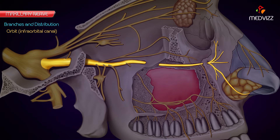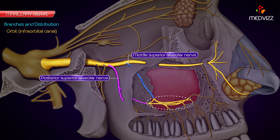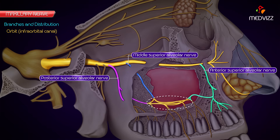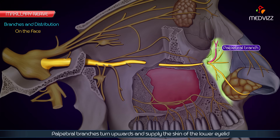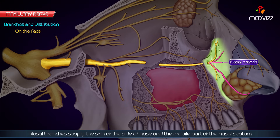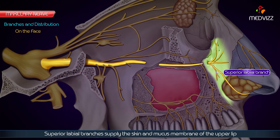An important point to note is that the superior dental plexus is formed by the posterior, middle, and anterior superior alveolar nerves. On the face, palpable branches turn upwards and supply the skin of the lower eyelid; nasal branches supply the skin of the side of the nose and the mobile part of the nasal septum; and superior labial branches supply the skin and mucous membrane of the upper lip.